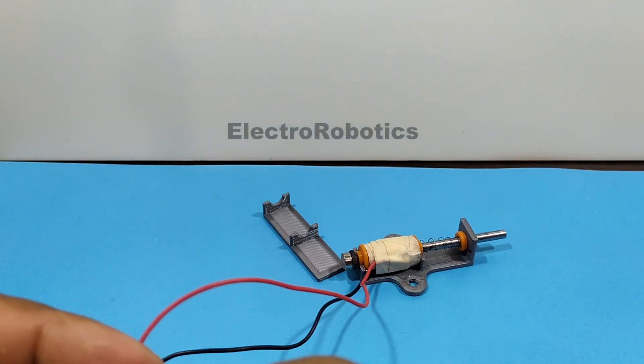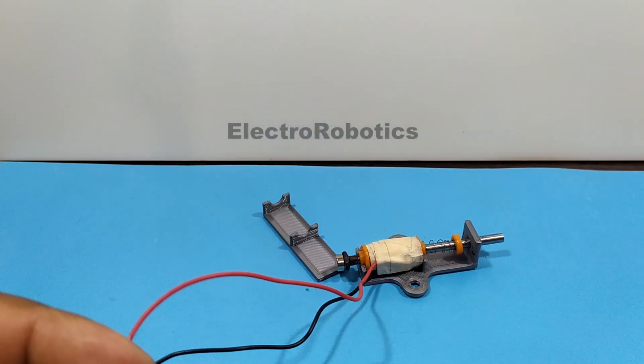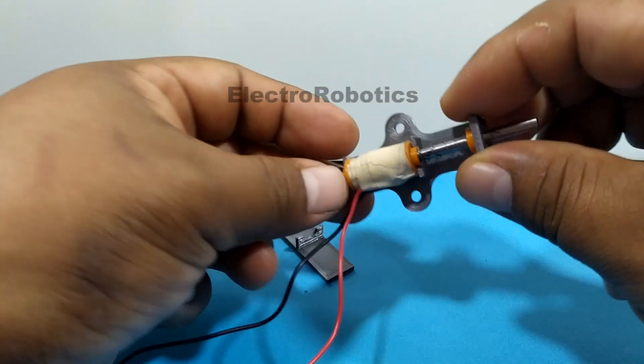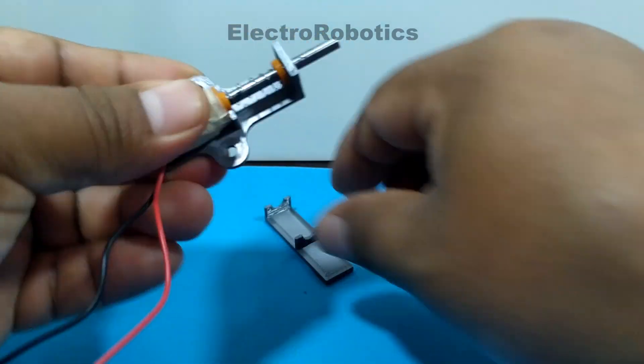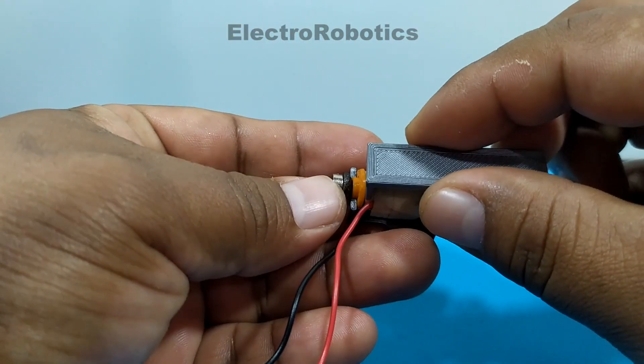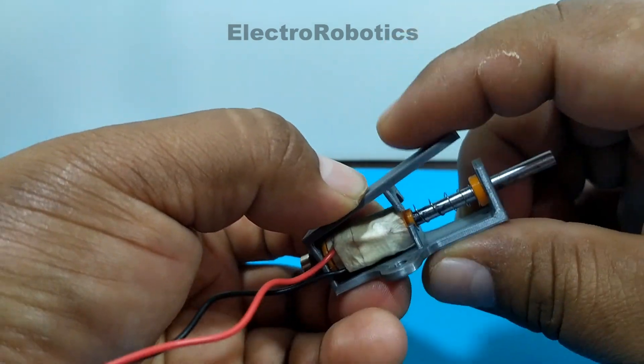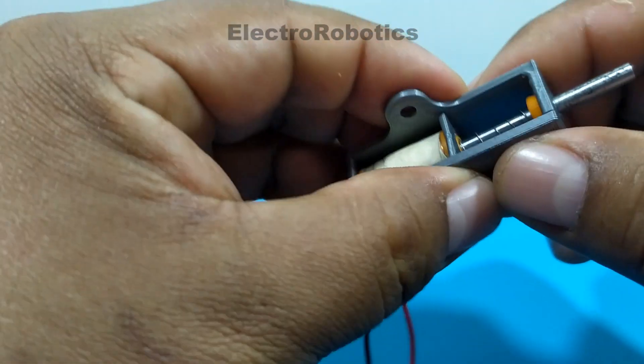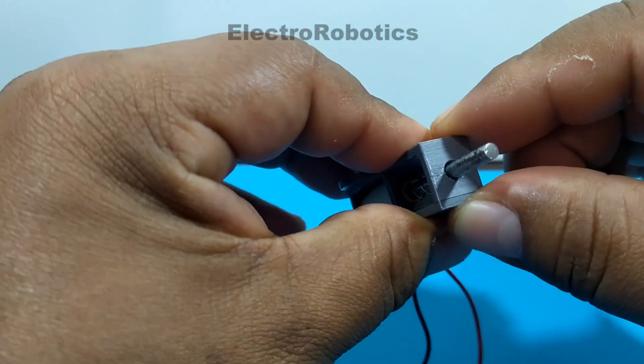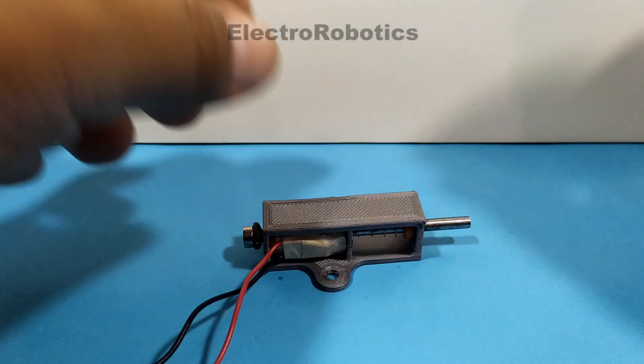We do a test. We energize the coil with a 12 volt source of more than 1 ampere. It's very good. The test went well. Now we put the lid on and we glue it.